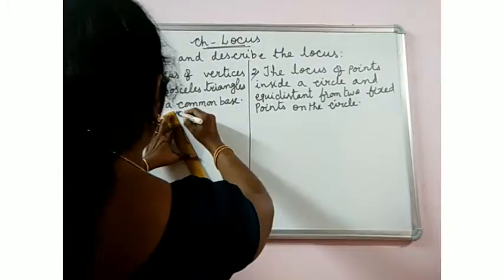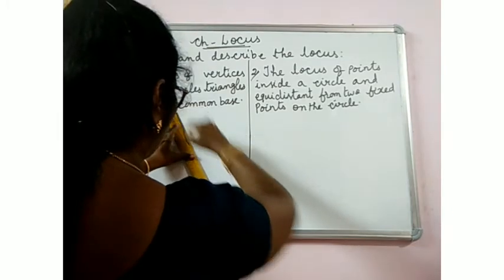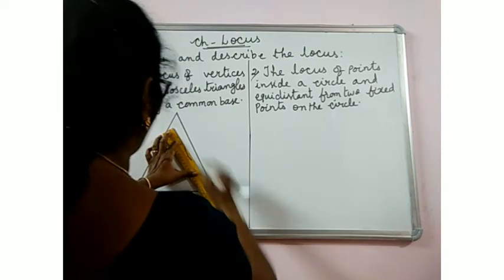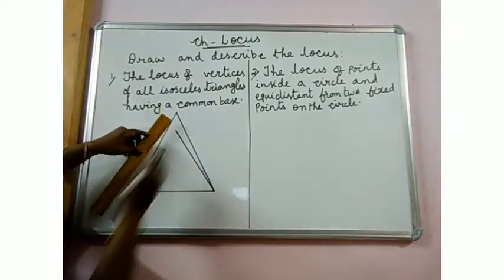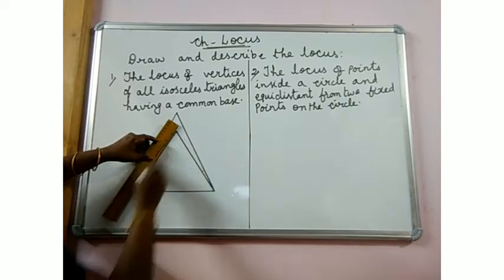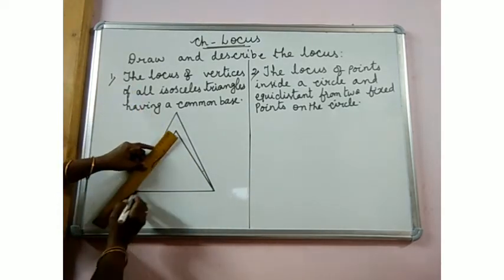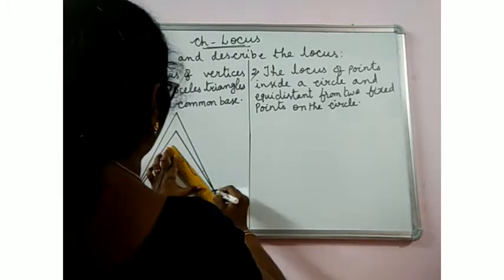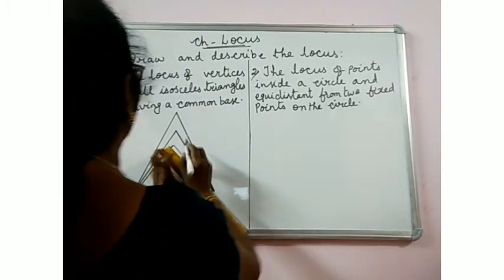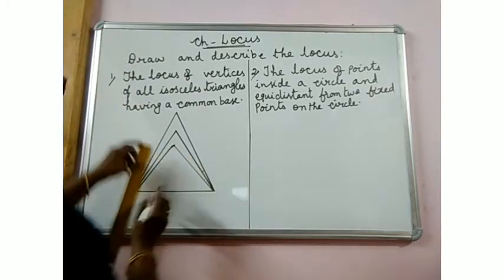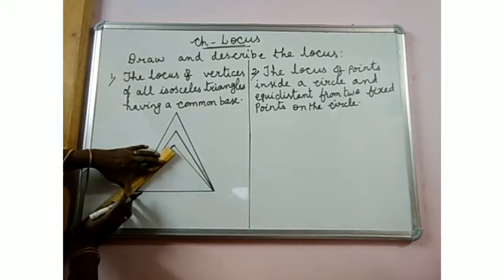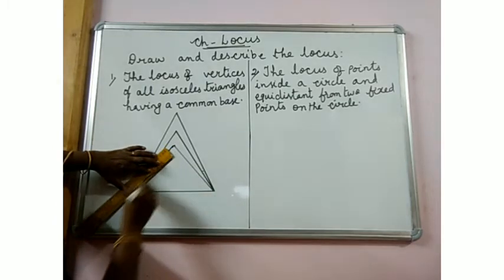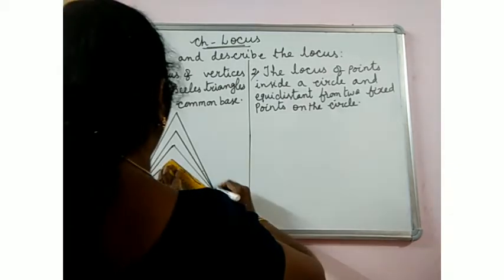You know that in an isosceles triangle, two sides are equal, having a common base. These are the isosceles triangles having the common base.